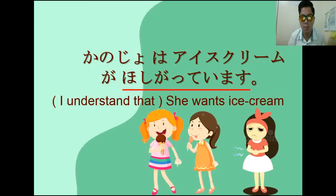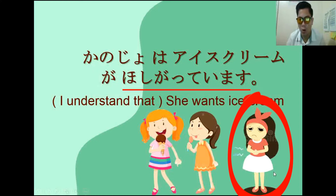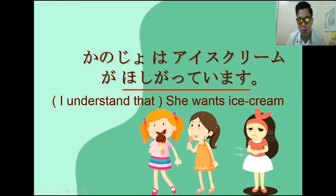Hoshigatteimasu means somebody or someone wants something. Kung sa last topic natin, ga hoshii is I want something. Si hoshigatteimasu naman, Minasang, is somebody wants something. Kaya sa sentence natin na ito is she wants something — according or based sa impression na pinapakita ng babaeng ito. Hindi natin siya pwedeng gamitin sa sariling feeling natin; yung ga hoshii ang gagamitin natin para doon.